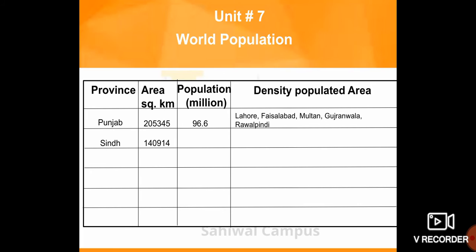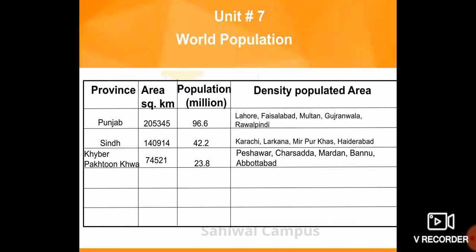The second province is Sindh. The area of Sindh is 140,914 square kilometers. The population of Sindh is 42.2 million. The populated areas of Sindh are Karachi, Larkana, Mirpur Khas, and Hyderabad. The third province is Khyber Pakhtunkhwa. The area of Khyber Pakhtunkhwa is 74,521 square kilometers. The population of Khyber Pakhtunkhwa is 23.8 million. The populated areas are Peshawar, Charsadda, Mardan, Bannu, and Abbottabad.